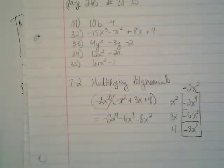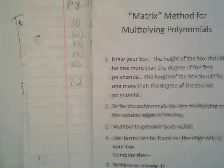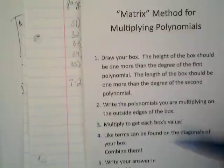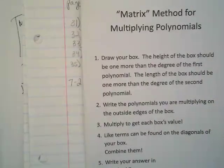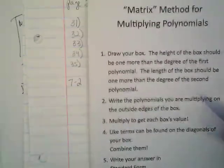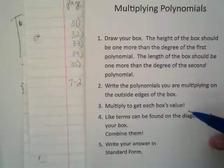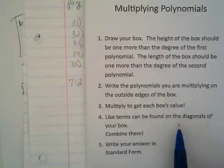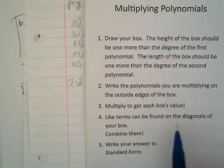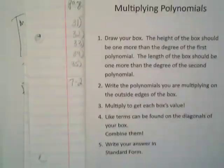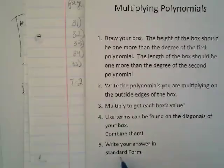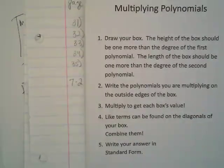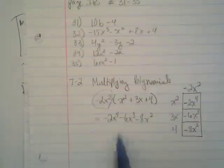And I realize I did not continue to read the directions as we went, but we did these things. So we drew our box. We wrote the polynomials that we were multiplying on the outside edges of the box. We multiplied to get each box's value. Like terms can be found in the diagonals. We'll do that as we go into this note foldable, and we'll combine them. And then we want to write our answer in standard form, which is what we did down here.